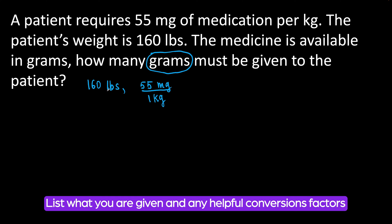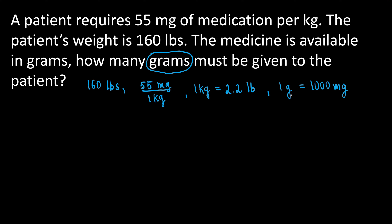Our patient's weight is in pounds, so we need a connection between pounds and kilograms. Let's write it down: 1 kg is equal to 2.2 pounds. This wasn't given in the problem — we had to come up with it ourselves. We also need to find grams, but the dosage is in milligrams, so let's write the connection: 1 g is equal to 1,000 mg. I think we have all we need.